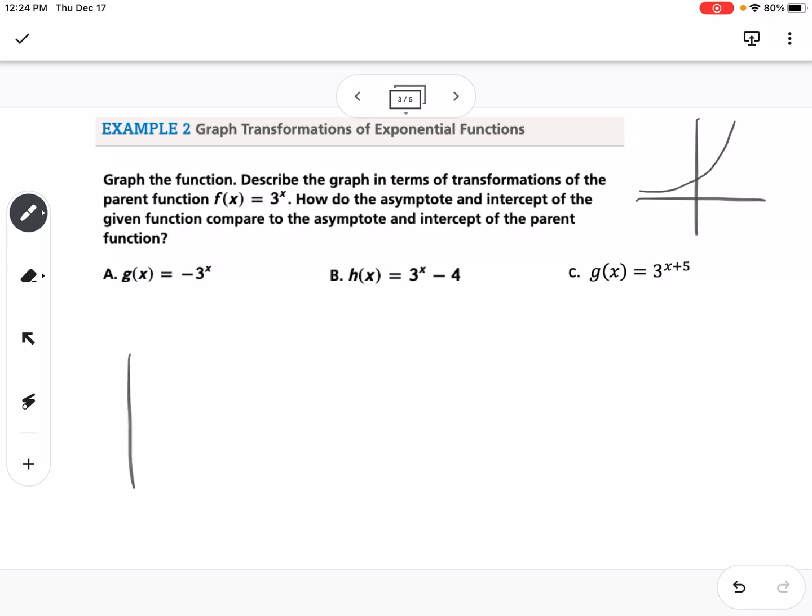So, for the first one, if we have negative 3 to the x, that negative, just like we've seen in the past, is going to reflect over the x-axis. So that means that our graph's going to look something like that. So it means our y-intercept, instead of being at positive 1, would be at negative 1, and the asymptote would remain the same, because it's still approaching 0 just from the other side.